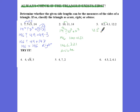So 12.2 squared, question mark, 4.1 squared plus 8.2 squared. When we square all of that, we get 148.84.